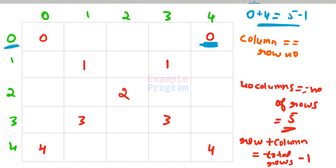So there are two conditions to check. First, whenever the row number equals the column number, display the number. Second, whenever row number plus column number equals total number of rows minus 1, display the number. Now let's write the program for this.